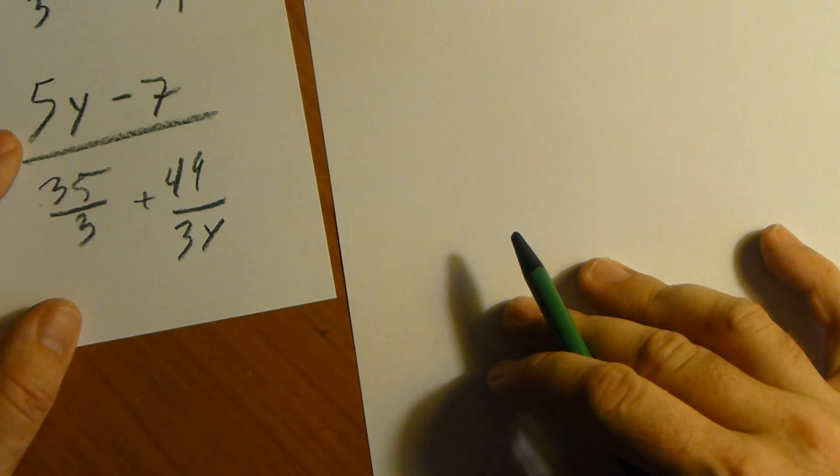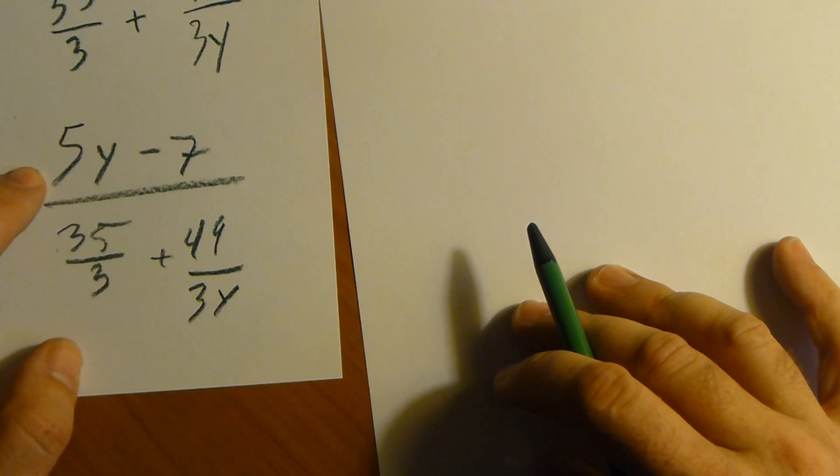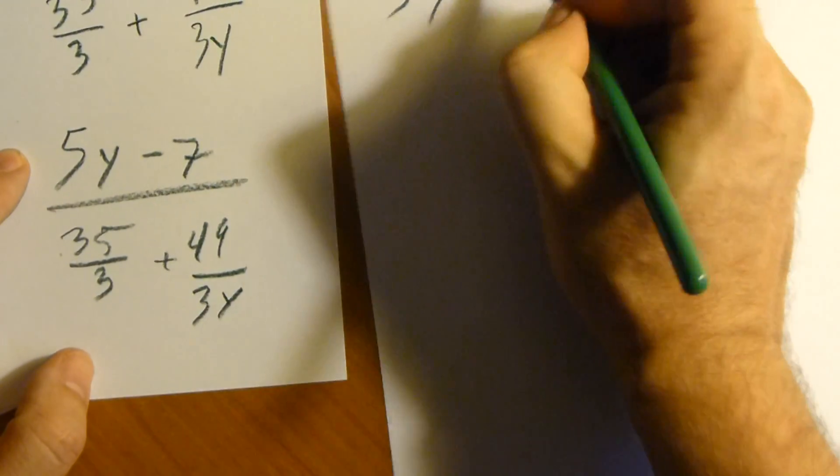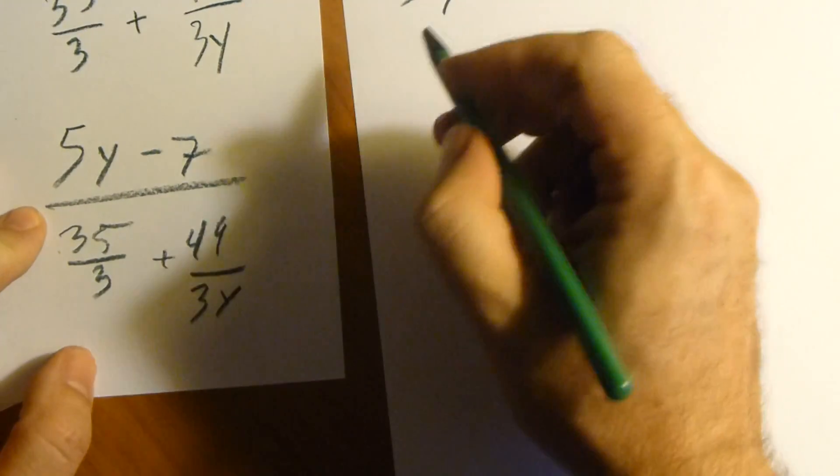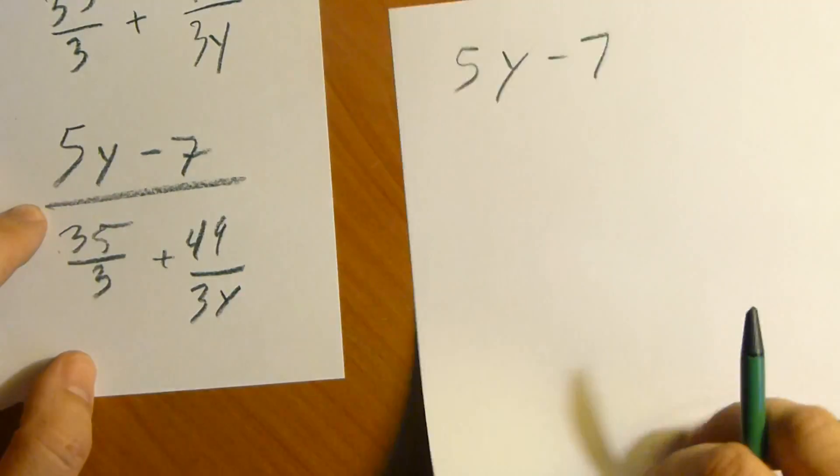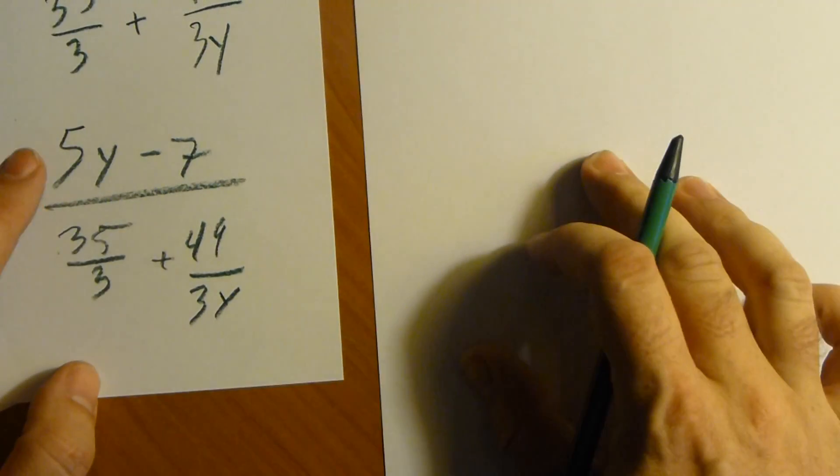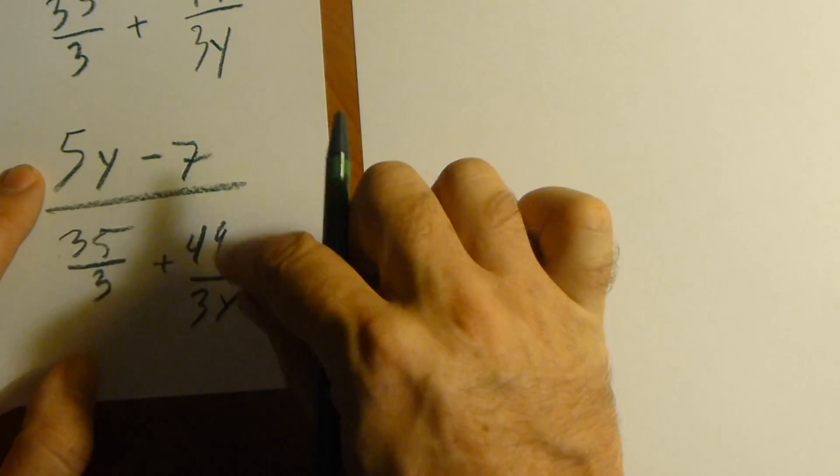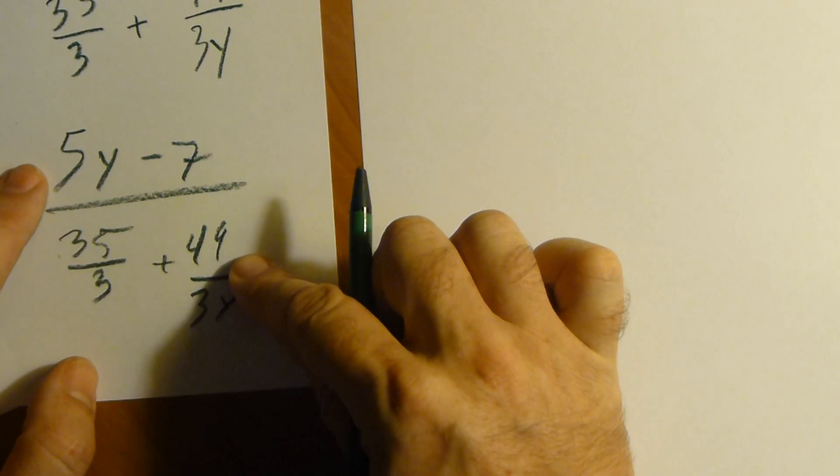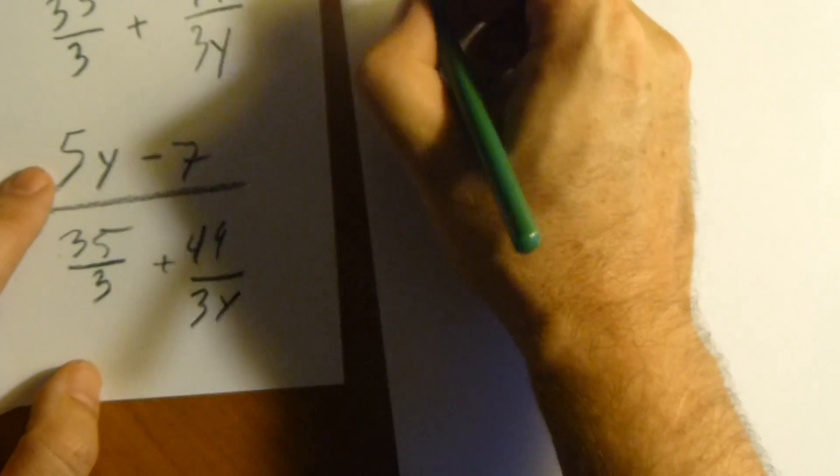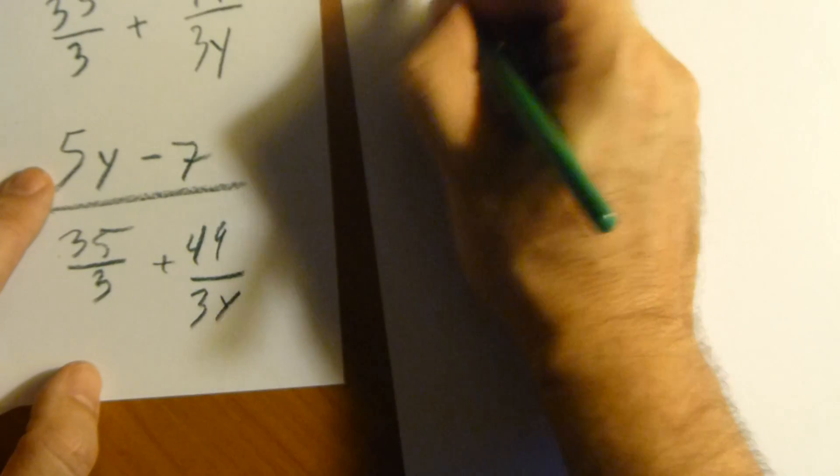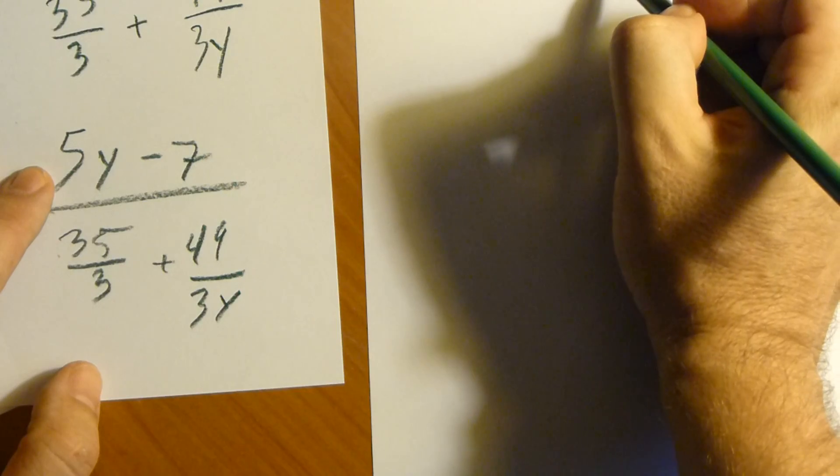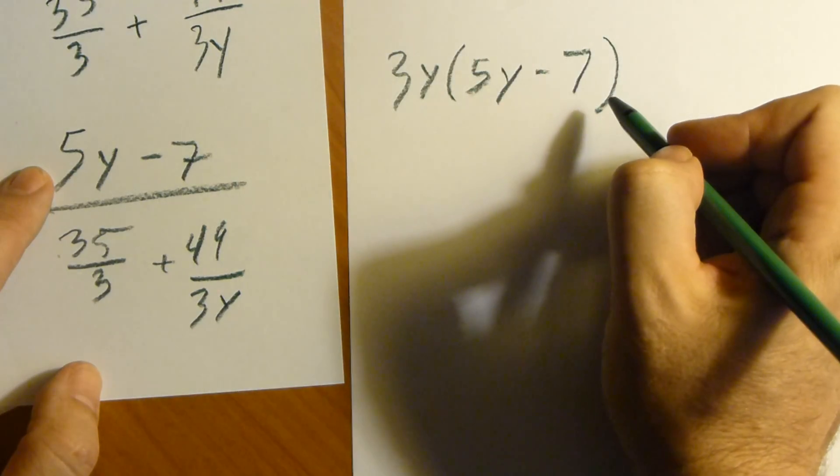So we have, right here, on top we have 5y minus 7. What we're going to do here to simplify, let me back up just a second. We need to simplify, so let's multiply 3y on top and on bottom. That'll simplify the bottom down here. So, on top we'll have 3y times 5y minus 7.